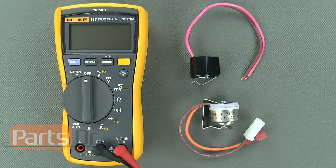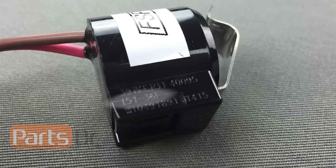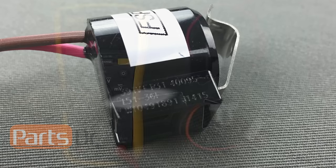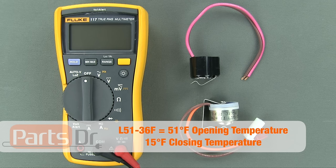Here is another defrost thermostat. This one has a plastic housing instead of metal. This defrost thermostat has L 51 minus 36 F engraved into the side. So this thermostat has an opening temperature of 51 degrees Fahrenheit and a closing temperature of 15 degrees Fahrenheit.